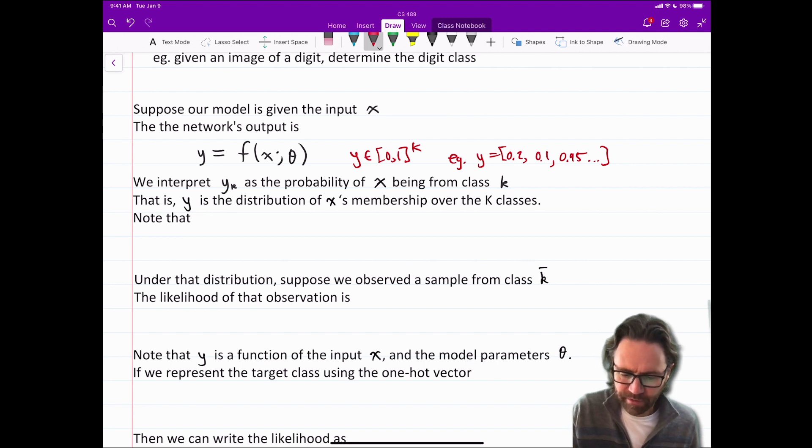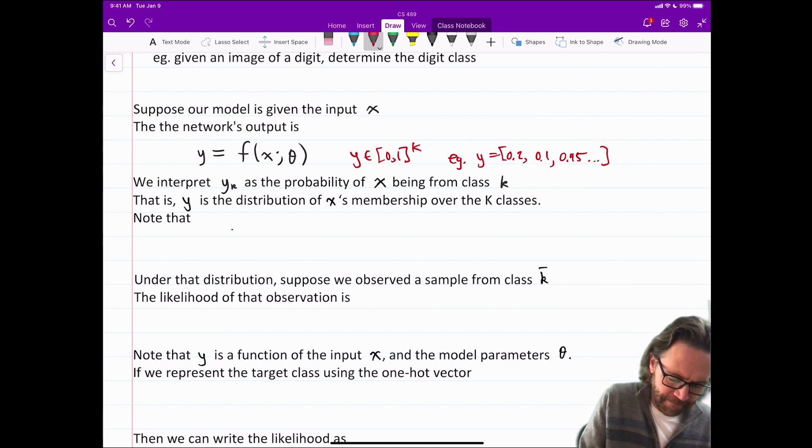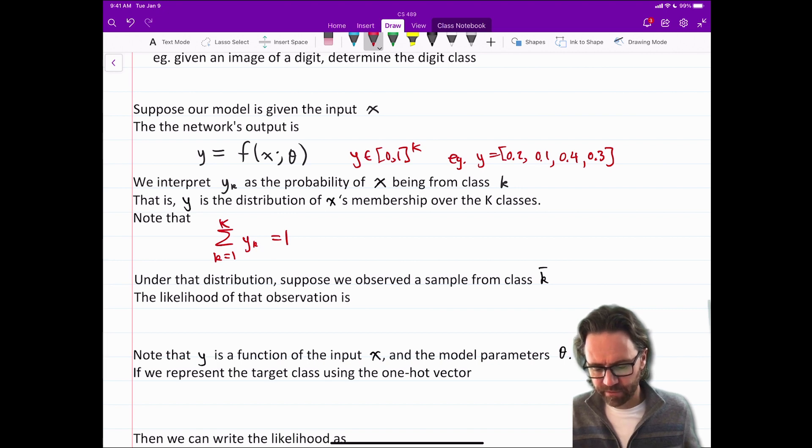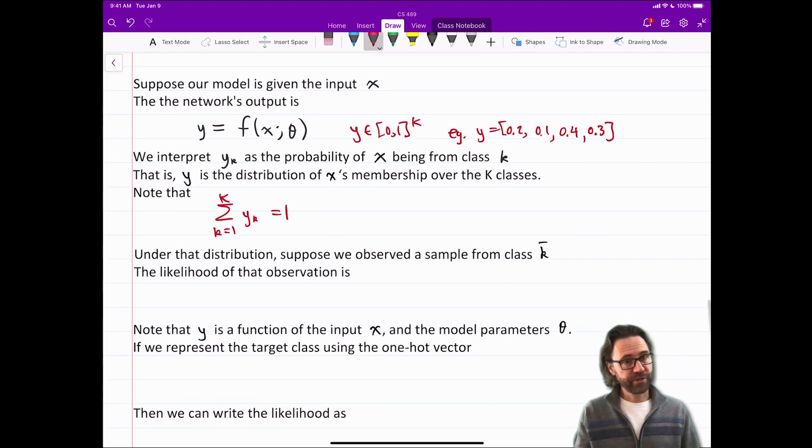Well that's a bad example actually because we also need that Y is a distribution of X's membership to the K different classes. So we actually need that if you add up all the Y's they equal one. So let me go back and reconsider my example here. 0.95 is too big. Let's see 0.1, 0.3, 0.4 and then let me finish off. That's 0.3. So if you add all those up I think you get 3, 4, 5, 6, yeah. You get a total of 1.